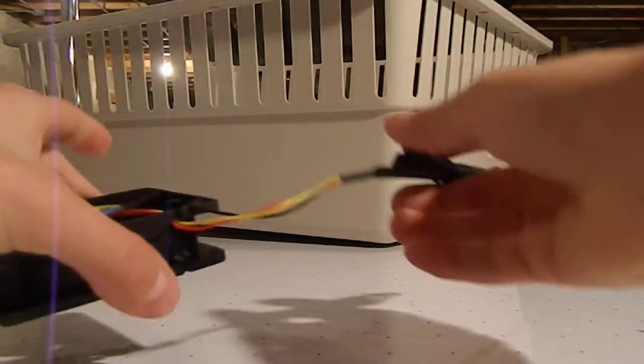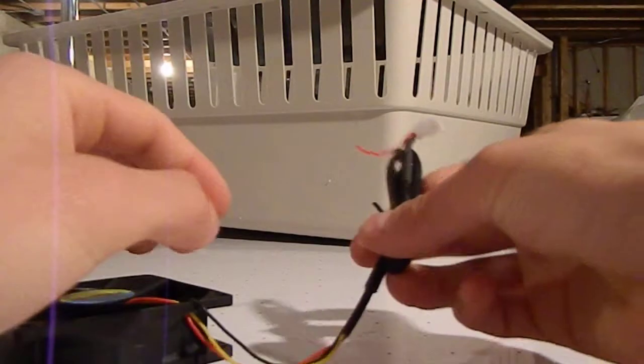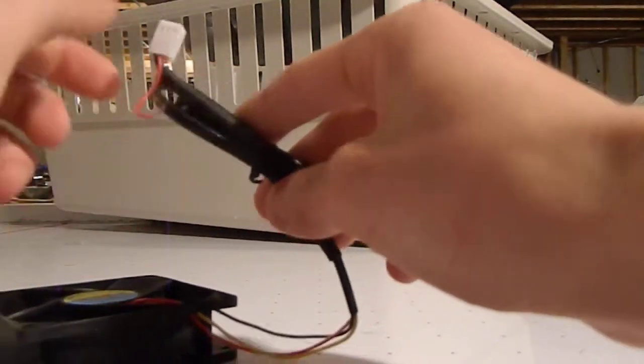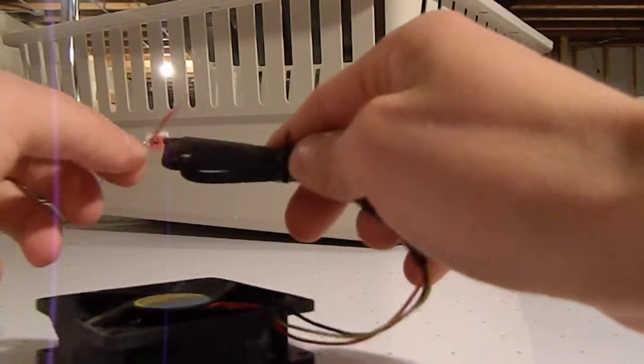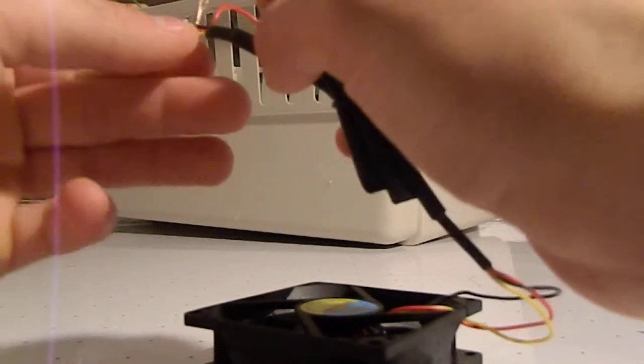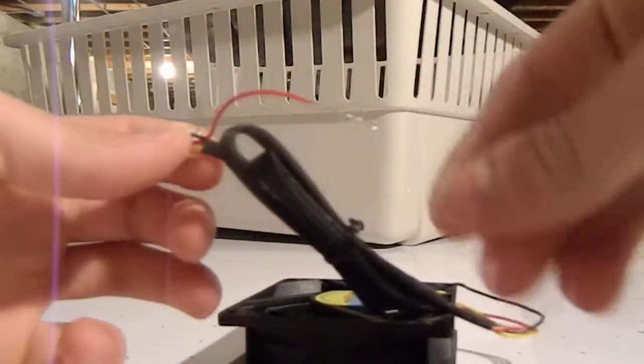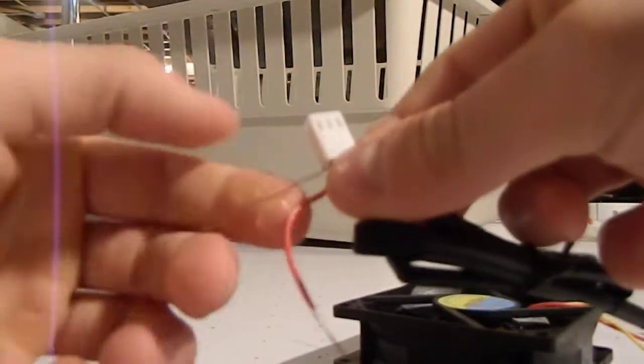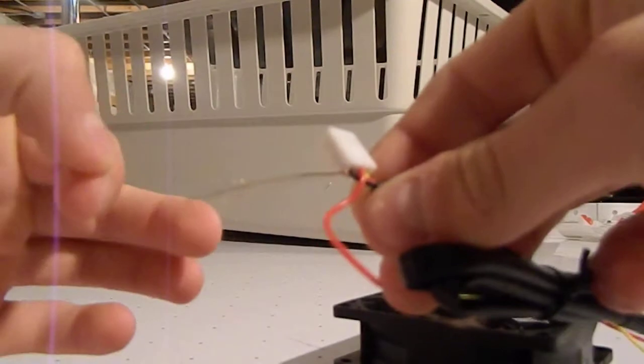And then you're going to take your computer fan, and then you're going to do the same. You're going to strip back the red and black wire with your knife. And I already have mine stripped back. Here's my red one, and then my black one is right here off to the side.